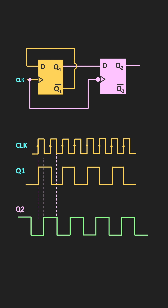And in this way, it is possible to generate the 90-degree phase shift, provided the duty cycle of the clock signal is equal to 50%. So if that is the case, then Q1 and Q2 will be phase shifted with respect to each other by 90-degree.